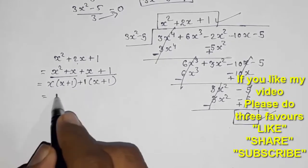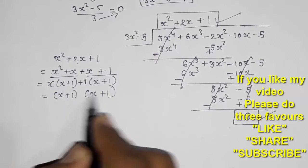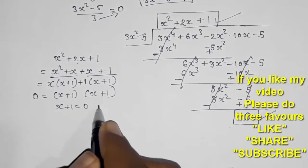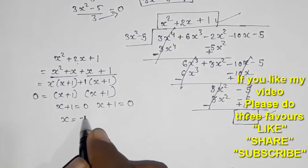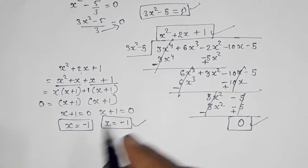So what will happen? We will get the two factors (x plus 1)(x plus 1). But we want 0, so take it equal to 0. So x plus 1 is equal to 0. Again x plus 1 is equal to 0. So x is equal to minus 1. Again x is equal to minus 1.